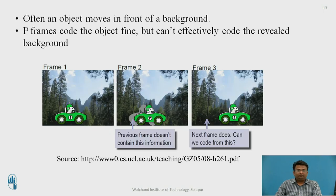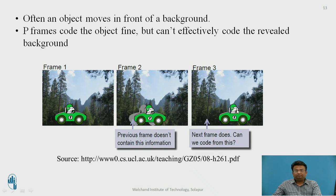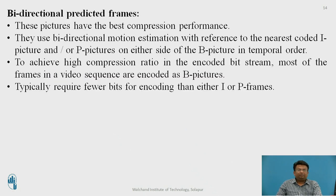When the background is stationary but an object moves in front of it, we can't effectively code the background. For example, when a car moves from one point to another, during the moment the car is at a given point, we don't have information about the background it is covering, and we have to rely on the future frame. Decoding the frame from the future is very difficult, and the previous frame does not contain the needed information — this is a problem with P-frames. To remove this problem, we can use bidirectional predicted frames, or B-frames.